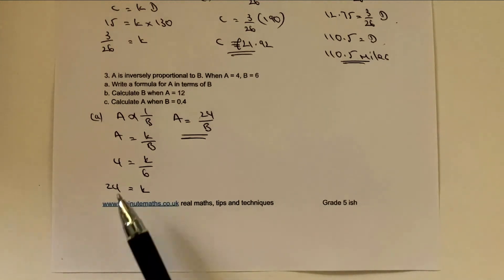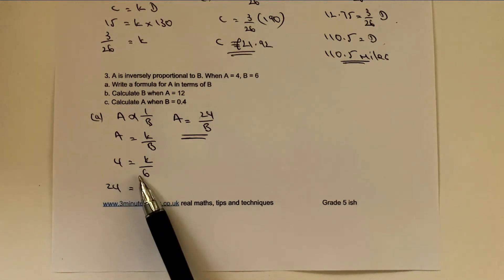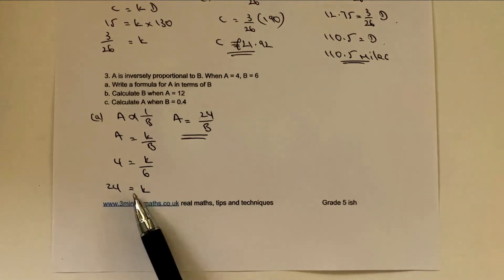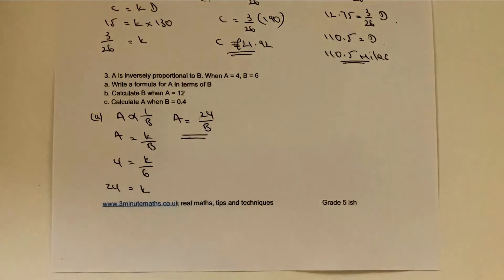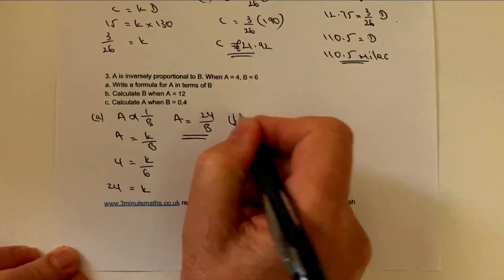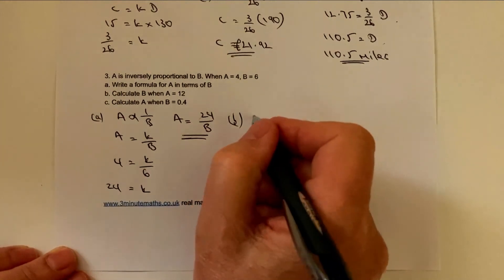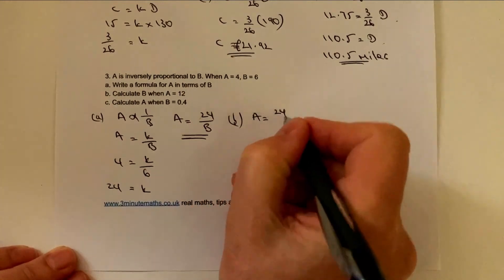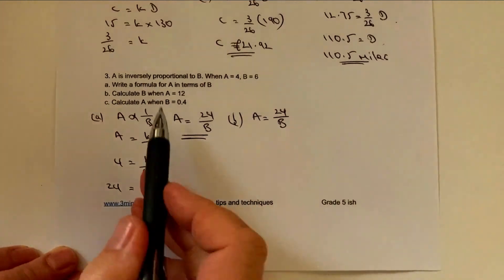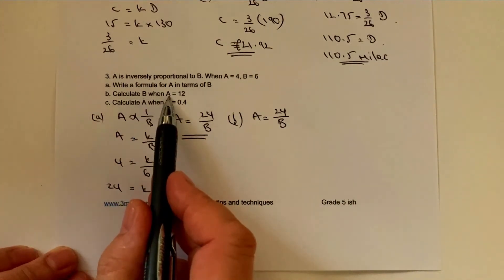Hopefully you've seen there, all I've done is I've multiplied both sides through by 6 and I get 24 equals K. That would give me the actual formula itself, which is the bit I'm going to use then to answer part B. So in part B, I'm going to use the same formula, A equals 24 over B. Calculate B when A equals 12.